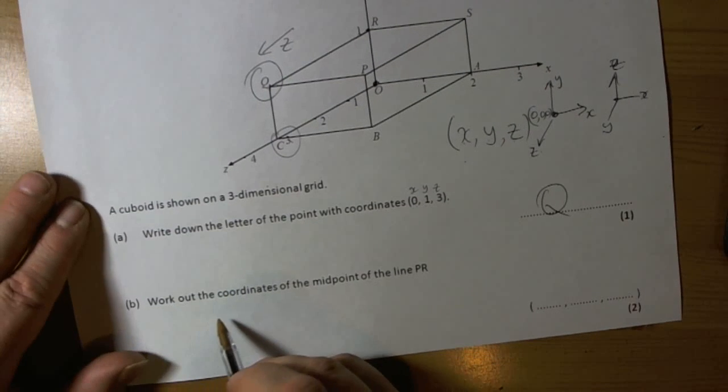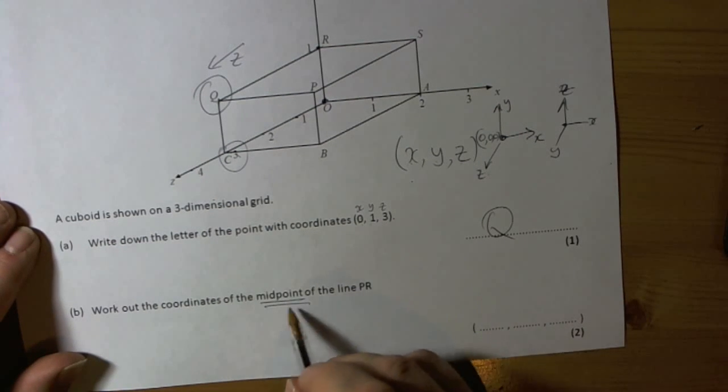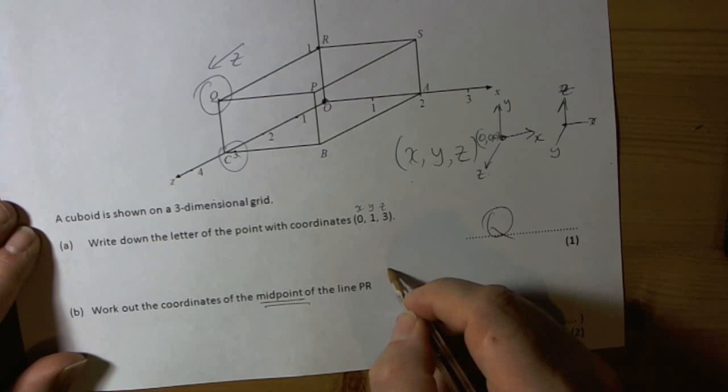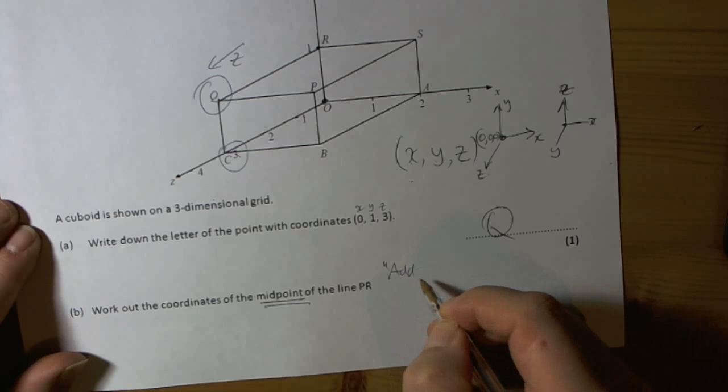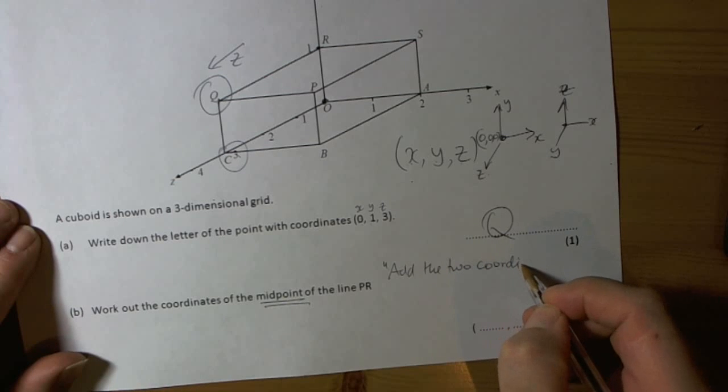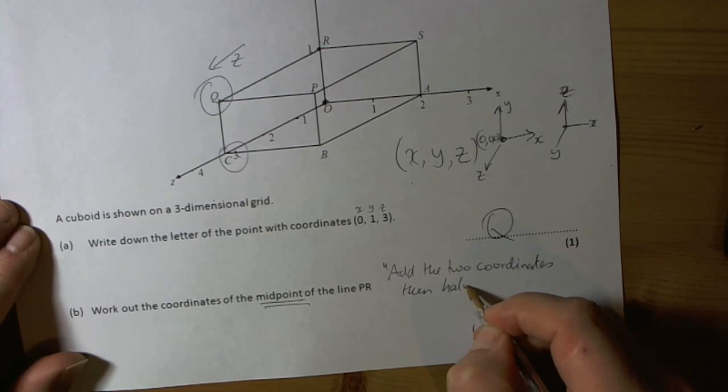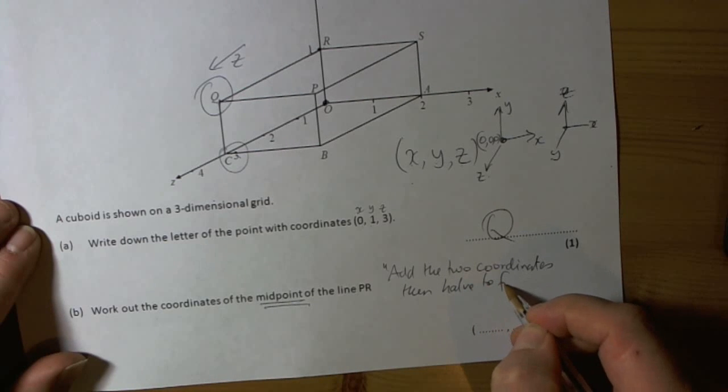The next part of the question says work out the coordinates of the midpoint. Well, we have to remember there's a rule for finding the midpoints of coordinates, and basically the rule is: add the two coordinates, then halve to find midpoint.